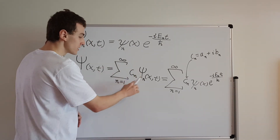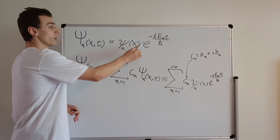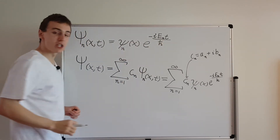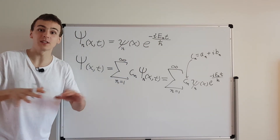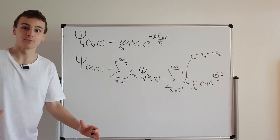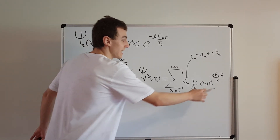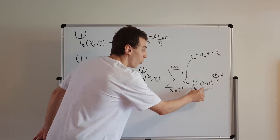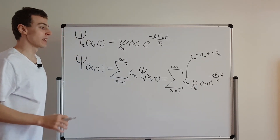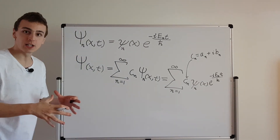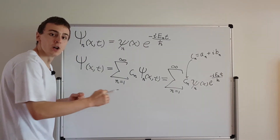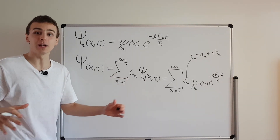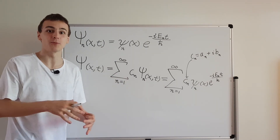Once you know the constants, and you know what these ψ_n(x) solutions are and the allowed energy levels, you know everything about the time evolution. You just need to keep track of when things are happening and what the initial conditions were. With the initial conditions, you can map out the time evolution of the wave function until it gets interacted with by the outside world.